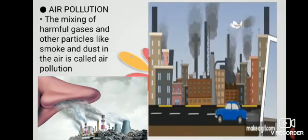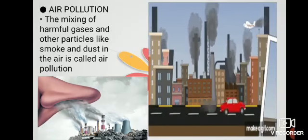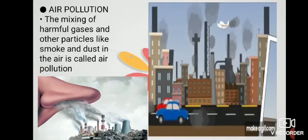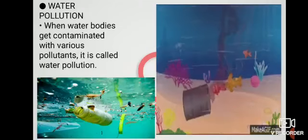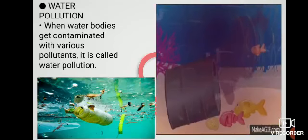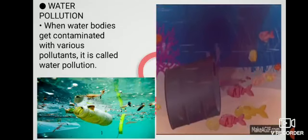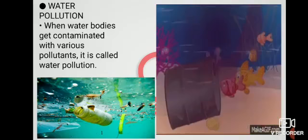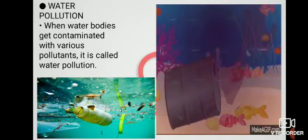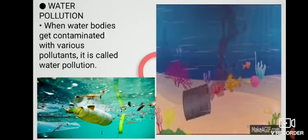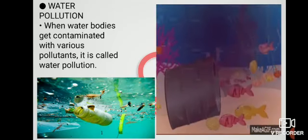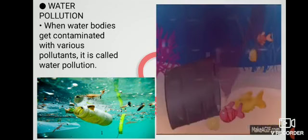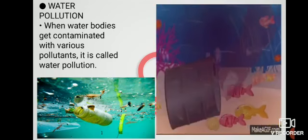Now moving forward to another type of pollution, that is water pollution. Here you can see in this GIF also. Water pollution occurs when harmful substances, often chemicals or microorganisms, contaminate a stream, river, lake, ocean, aquifer, or other body of water, degrading water quality and rendering it toxic to humans or the environment.